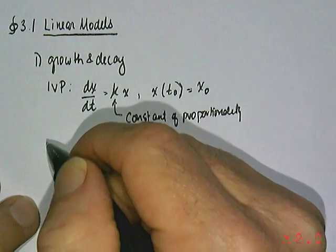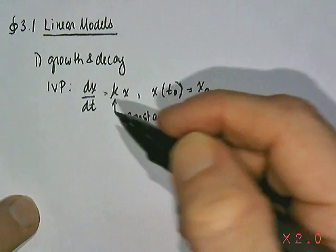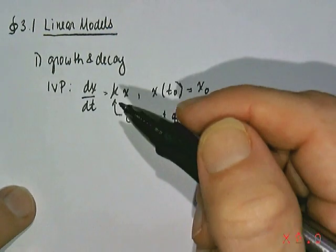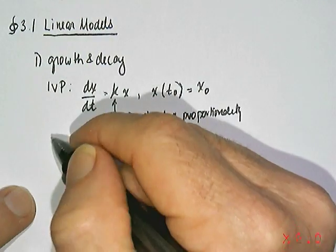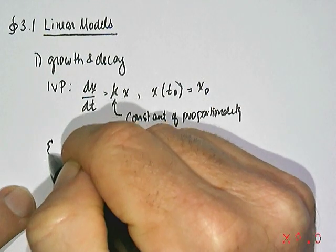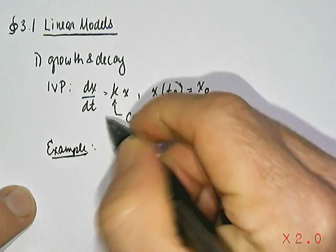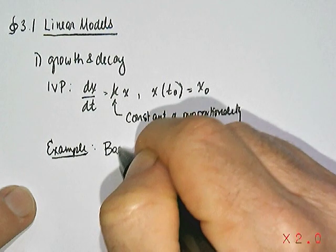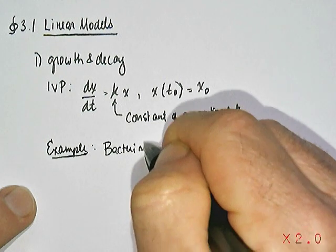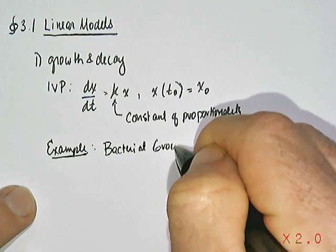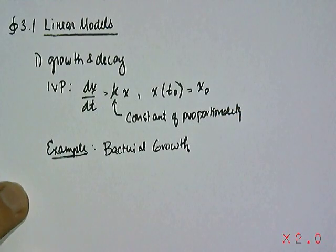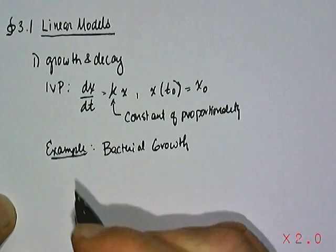So the example that we're going to look at in this particular topic area of linear models of growth and decay will be bacterial growth. We're going to make some assumptions and build our model and then answer a few questions using the model.